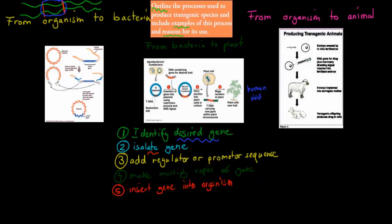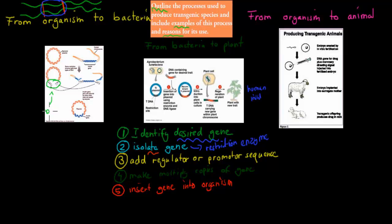We do that with something called an excision enzyme, or restriction enzyme. What the restriction enzyme does is cut out parts of the DNA — for example, parts of a bacteria's DNA. So it cuts out parts of the bacterial DNA, and it also cuts out parts of the human DNA.